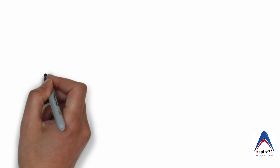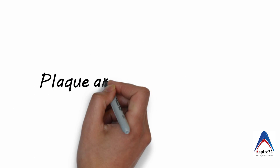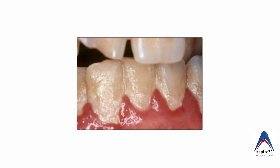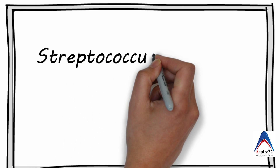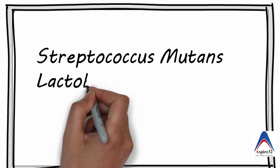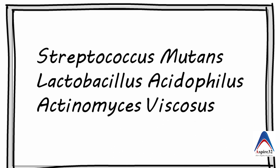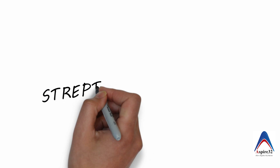Let's learn about the role of microorganisms in the initiation of caries. Plaque is a soft tenacious substance which is sticky in nature. It contains various microorganisms, water, and salivary proteins. Not all organisms from the plaque are responsible for caries formation. Basically there are three organisms involved in caries formation: Streptococcus mutans, Lactobacillus acidophilus, and Actinomyces viscosus. Each organism has a specific role in different types of caries formation.